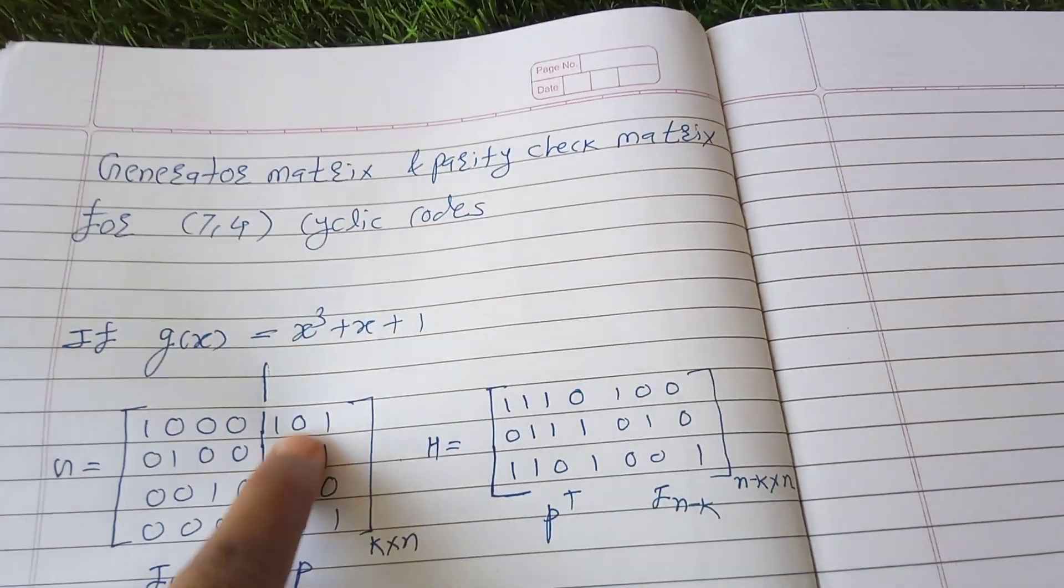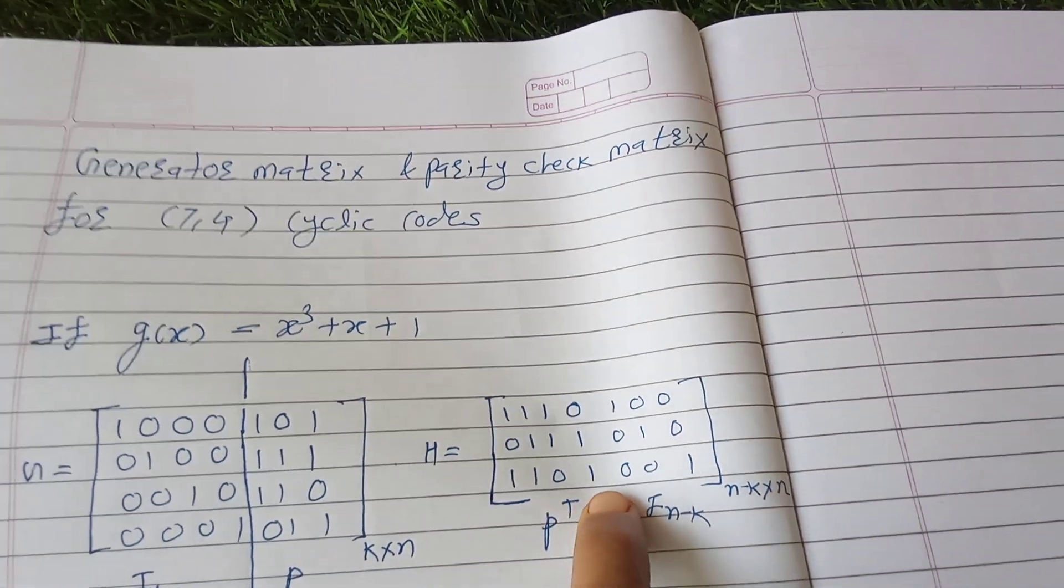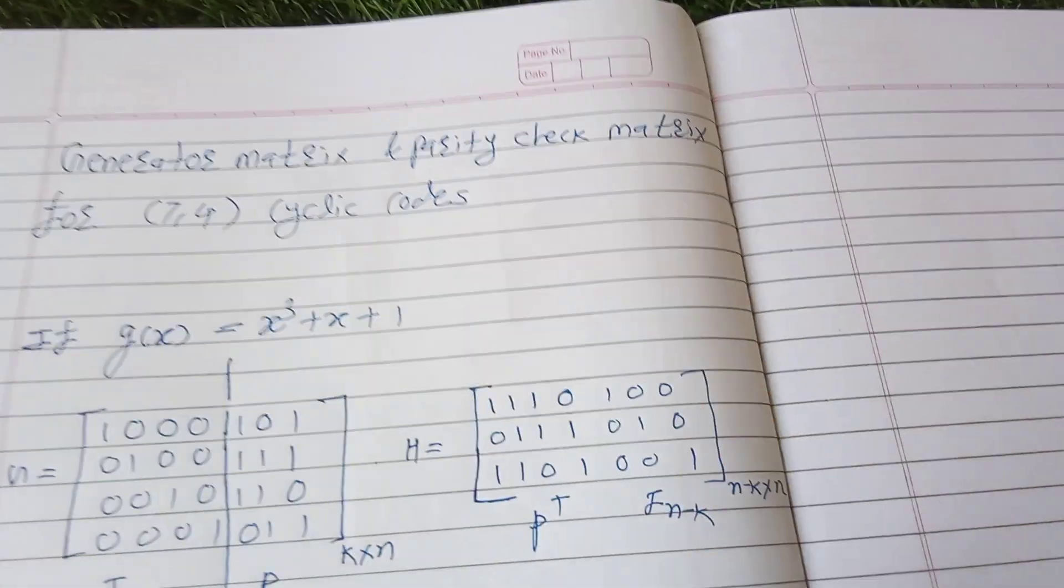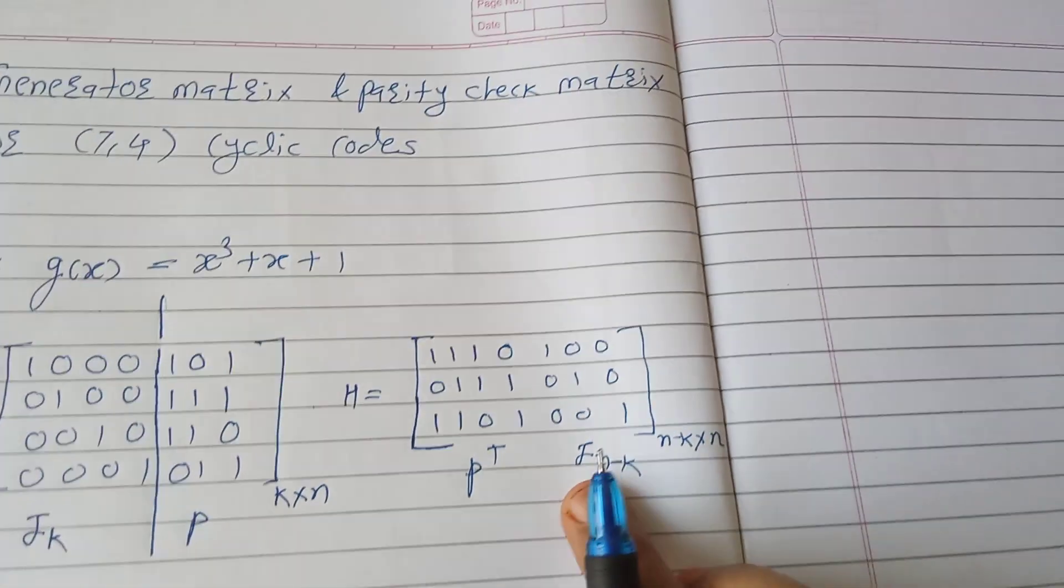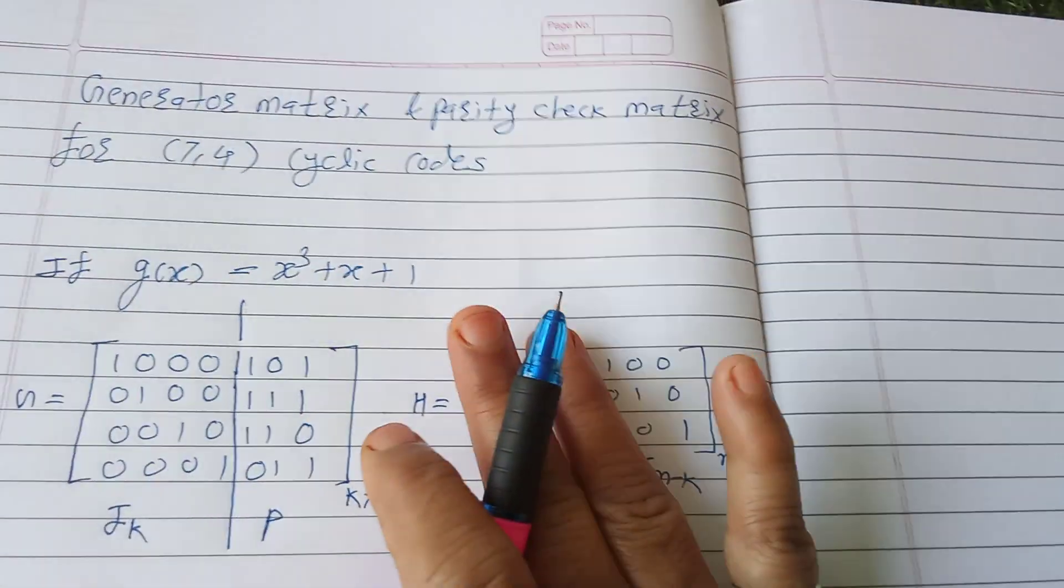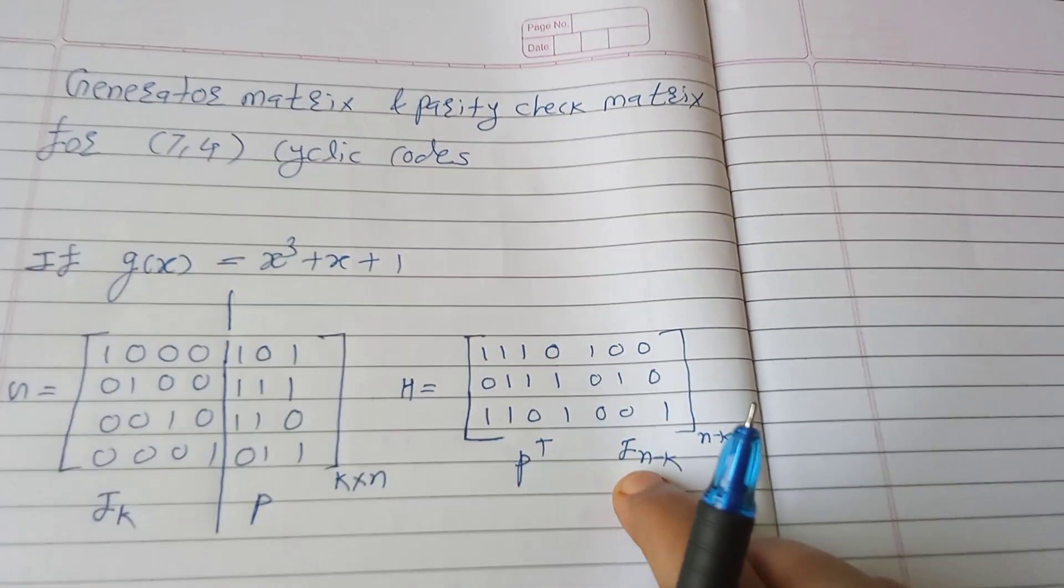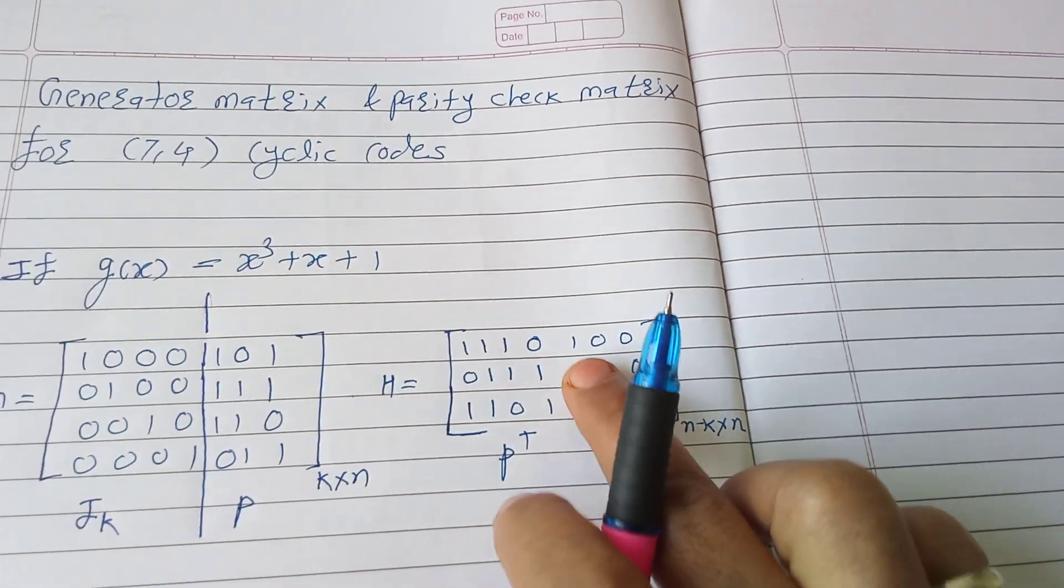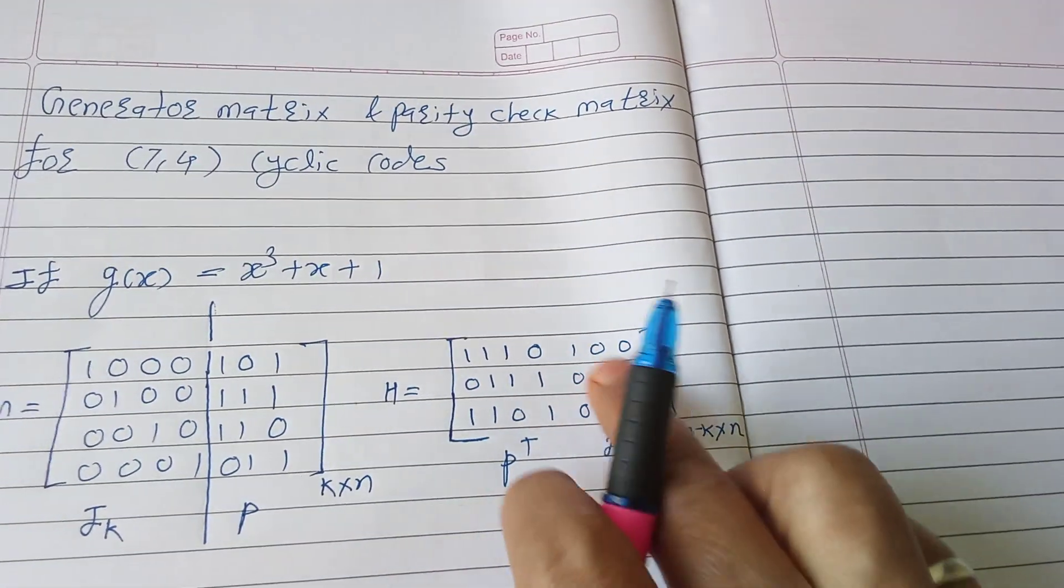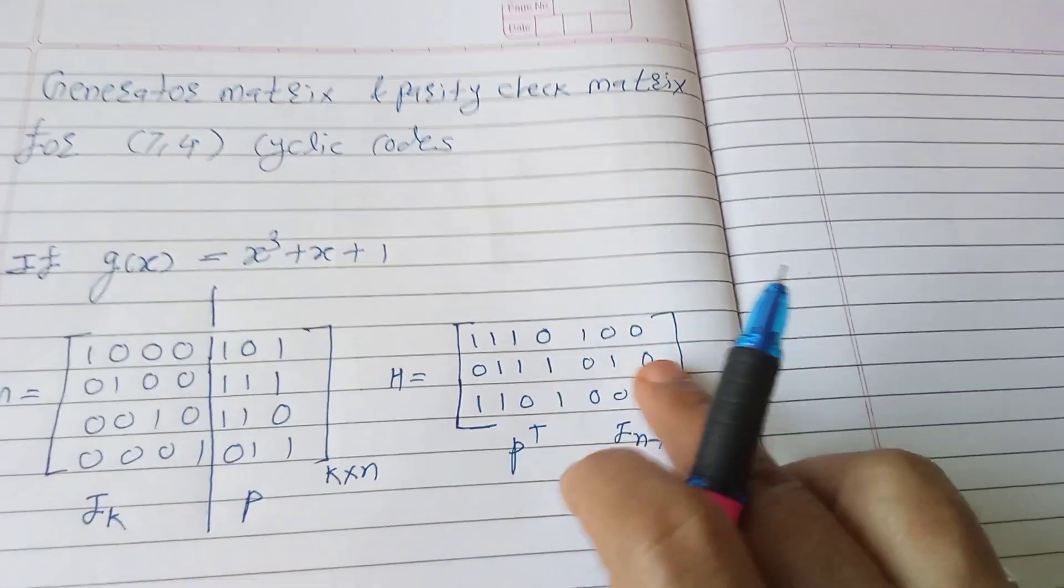Then one one zero one, third row. Then after that, after this block, there is identity matrix of dimension n minus k. N minus k is three, so one zero zero. You write it as an identity matrix: one zero zero, zero one zero, zero zero one.